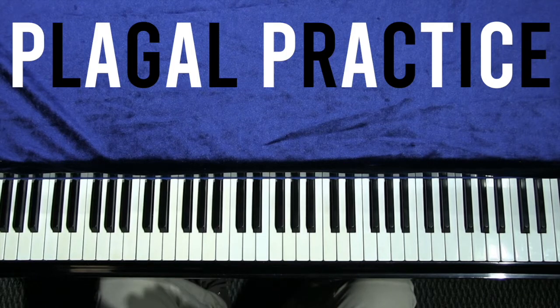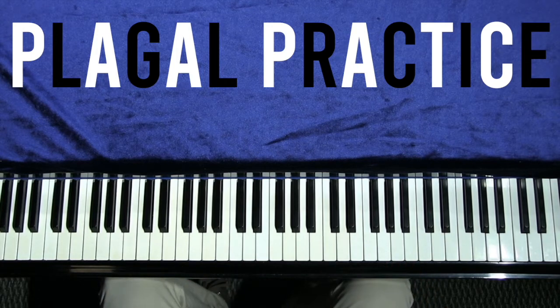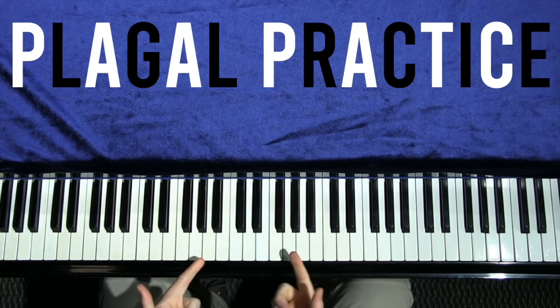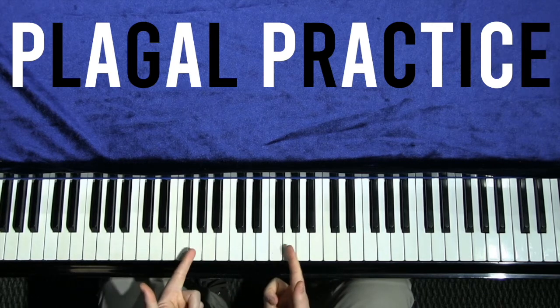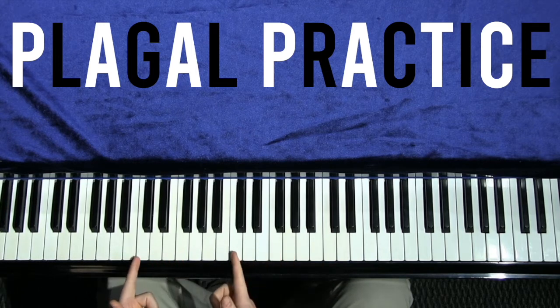We travel the opposite direction around the circle of fifths when we're playing plagal cadences than we do when we're playing perfect cadences. What that gives us is instead of moving down a fifth from five to one to get our resolution, we're moving down a fourth from four to one.